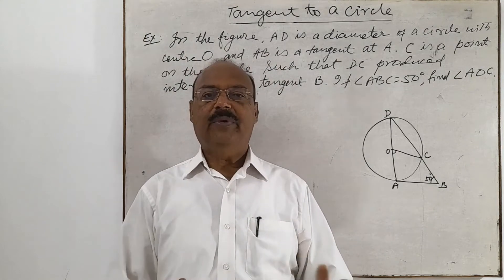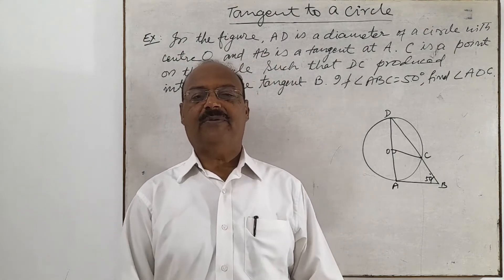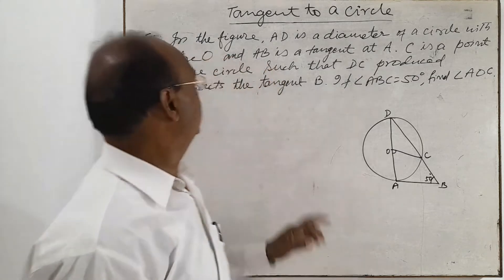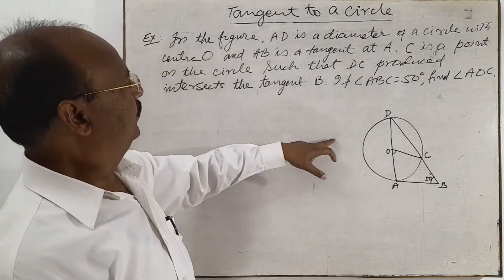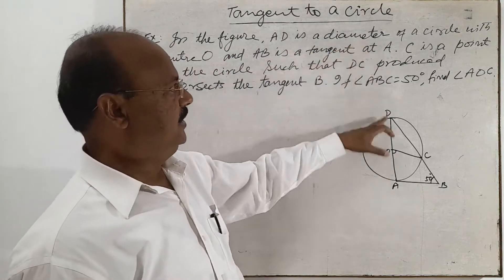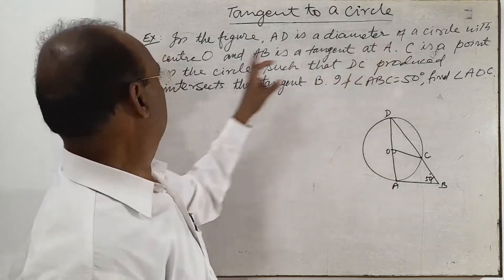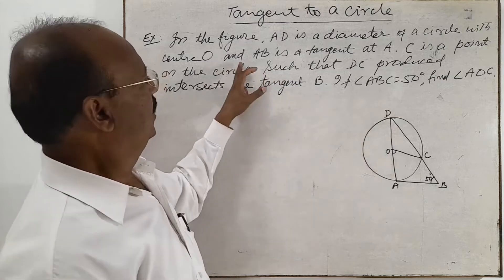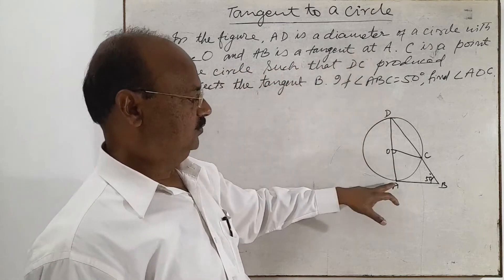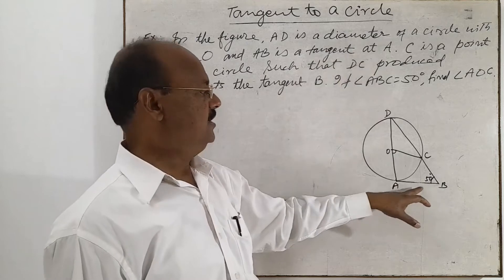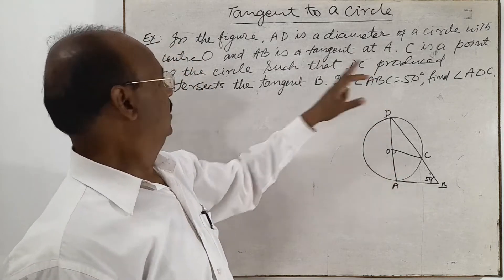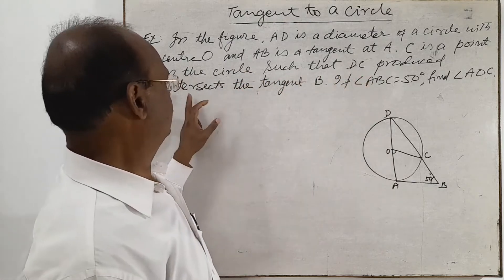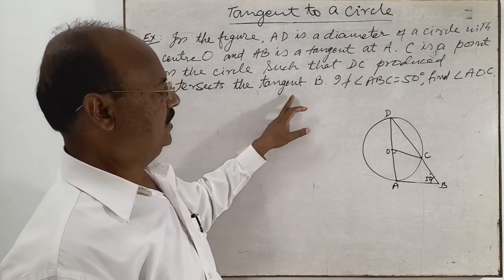Here we are going to discuss a very simple and interesting question from the topic tangent to a circle. In the figure, AD is a diameter of a circle with center O. This diameter AD passes through center O, and AB is a tangent at point A. C is a point on the circle such that DC produced intersects the tangent at B.